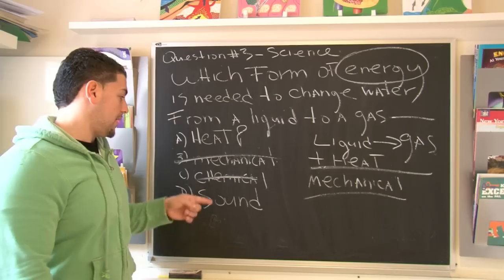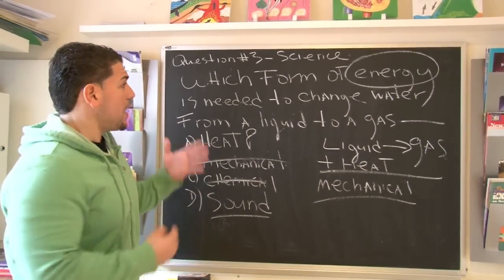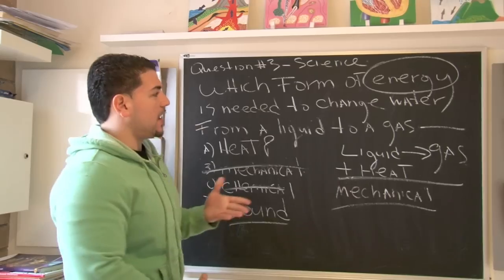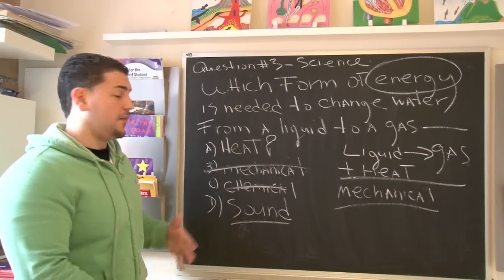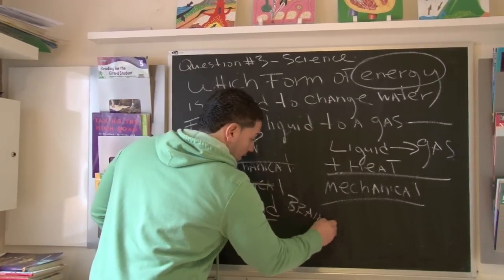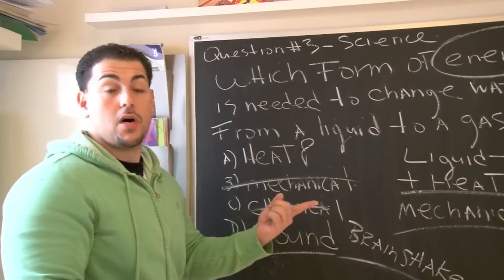So let's keep our eye on heat. And finally, the last choice they give us is something called sound. If we look at this question, they're not talking about playing an instrument here. They're not talking about playing the piano. So they're not talking about using sound in any way or form. So this is what we call a brain shaker. We call it a brain shaker because it's used to throw you off.